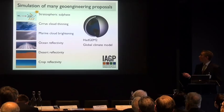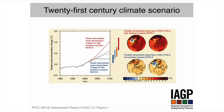In terms of the background or framing for our modelling, we used a simulation of 21st century climate where we implemented geoengineering in our models in 2020, kept it fixed for 50 years to 2070, and then suddenly ceased the geoengineering and let our models run through to 2100 to see what the termination impact would be. Our no-geoengineering scenario was RCP 4.5.